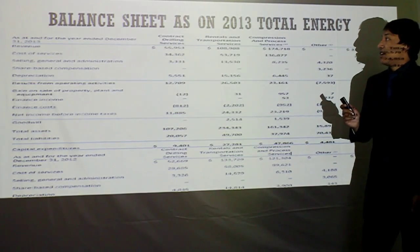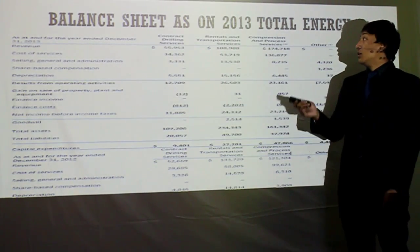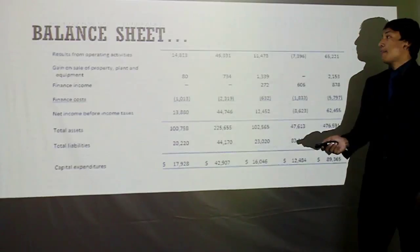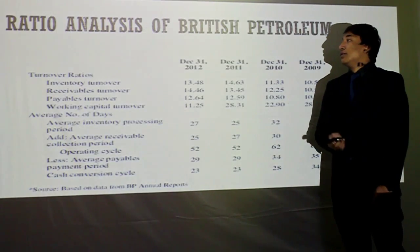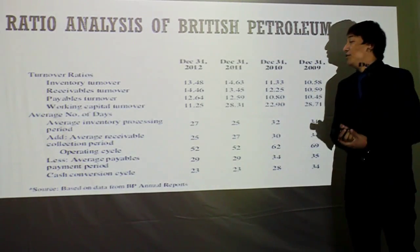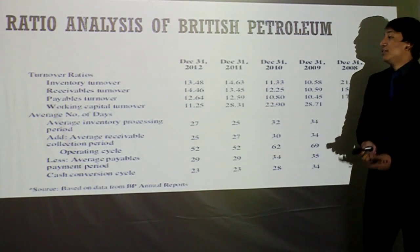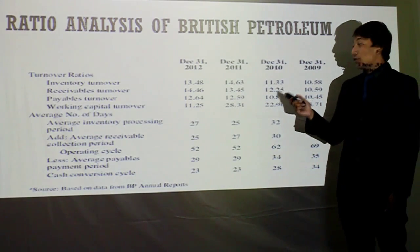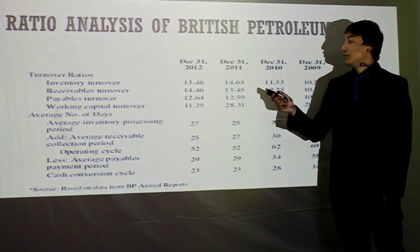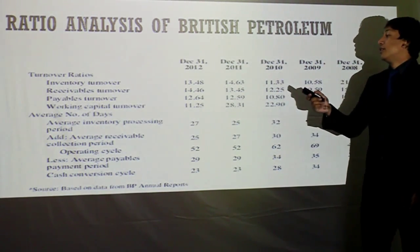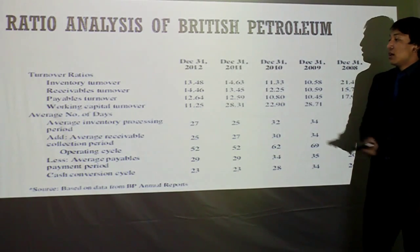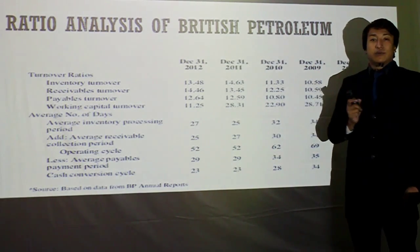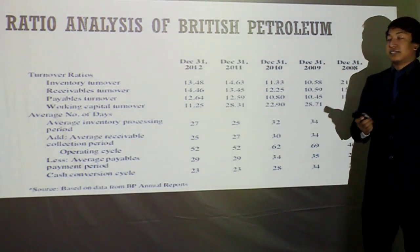The property, plant, and equipment values are given there. The balance sheet as of 2013 of Total Energy continued. The revenue turnover of British Petroleum decreased gradually from 2011 to 2012, whereas the receivable turnover increased. On the other hand, the working capital turnover also decreased gradually.